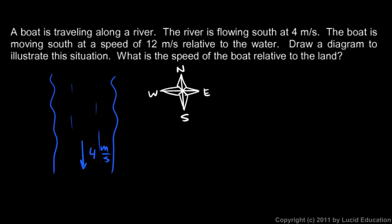The boat is moving at 12 meters per second relative to the water, and it's also going south, so we draw it heading in the same direction. Here's the boat at 12 meters per second. A picture often helps us think it through. In this case, the river is moving south and the boat is moving with the river — you can think of the current as giving the boat a little extra speed. The combined speed relative to the ground is 12 plus 4, which gives us 16 meters per second.